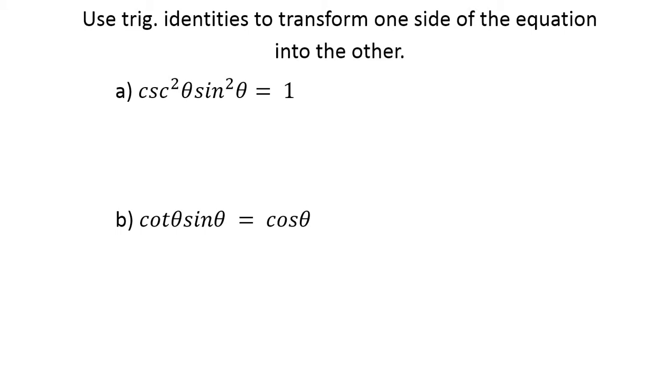So let me show you a couple examples and we're going to try some. So this very first one, we've got cosecant squared sine squared equals one. Well, one's pretty simple here.